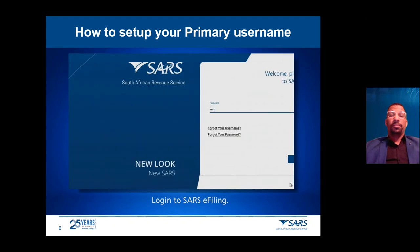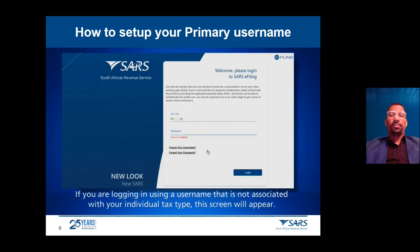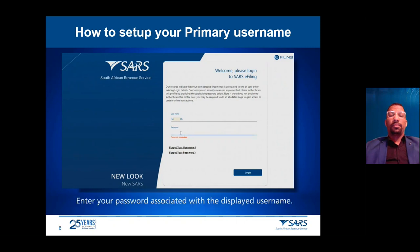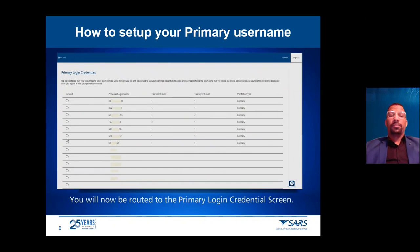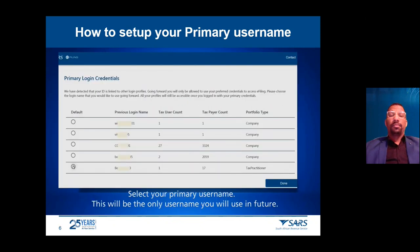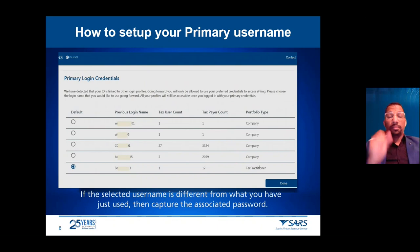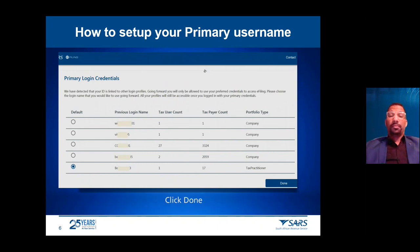Log into SARS e-filing. If you are logging in using a username that is not associated with your individual tax type, a prompt screen will appear. Enter your password associated with the displayed username and click Login. You will now be routed to the primary login credentials screen. Select your primary username — this will be the only username you will use in future. If the selected username is different from what you have just used, capture the associated password and click Done.